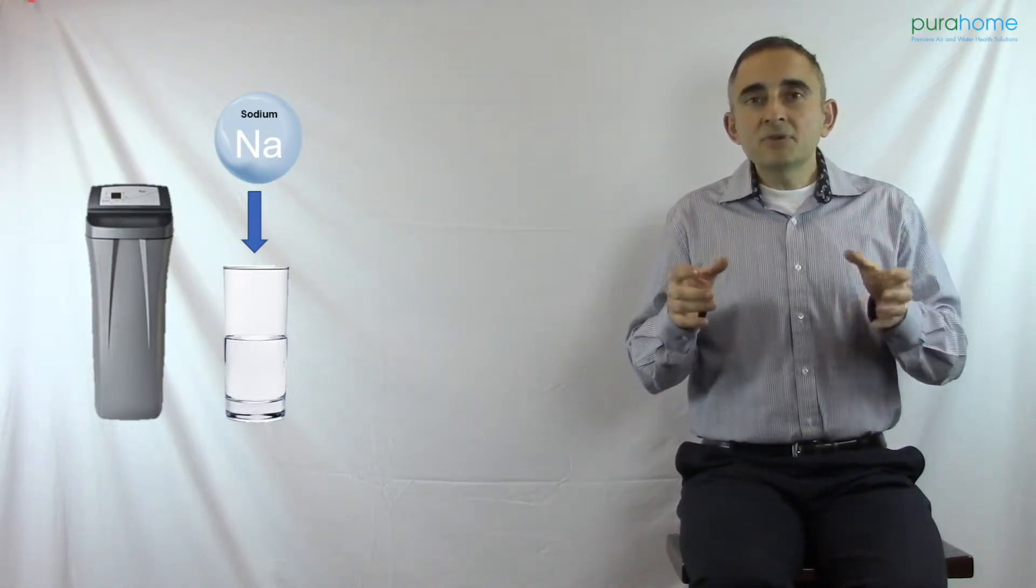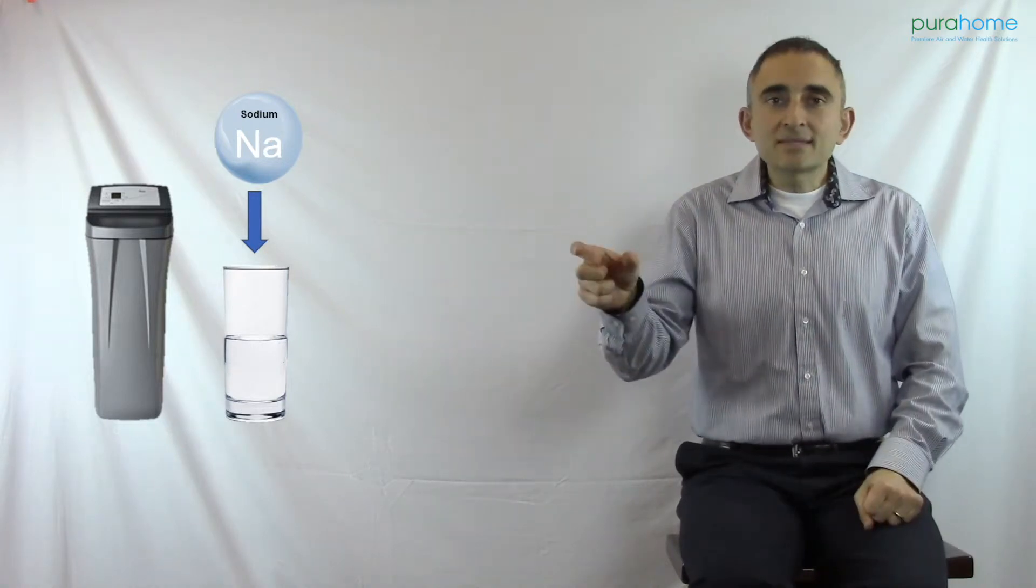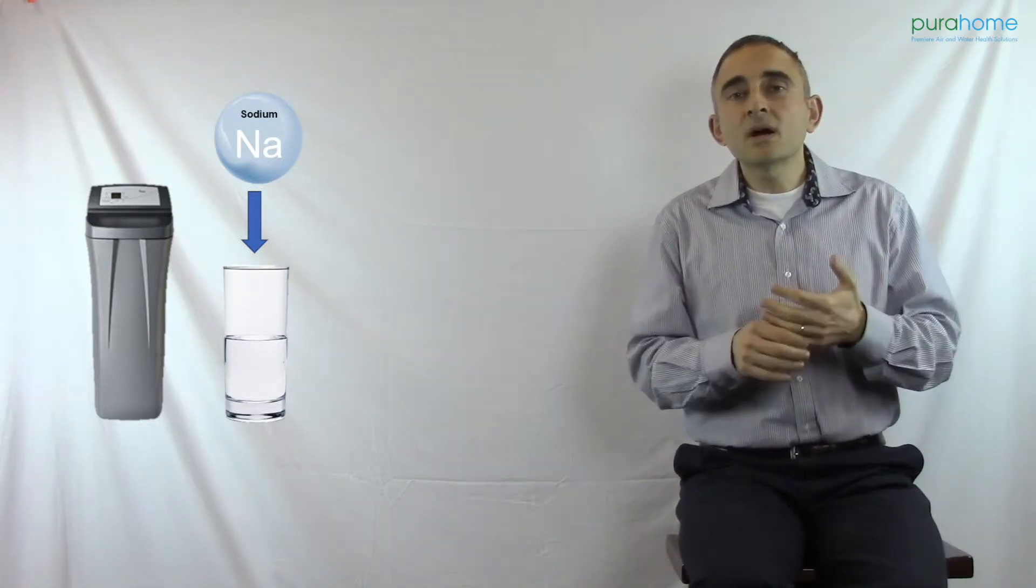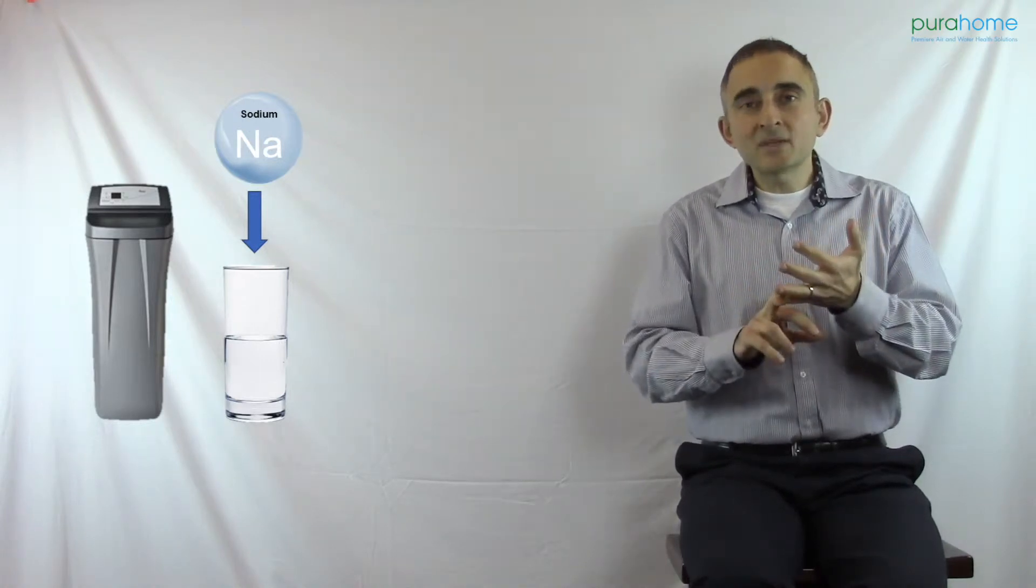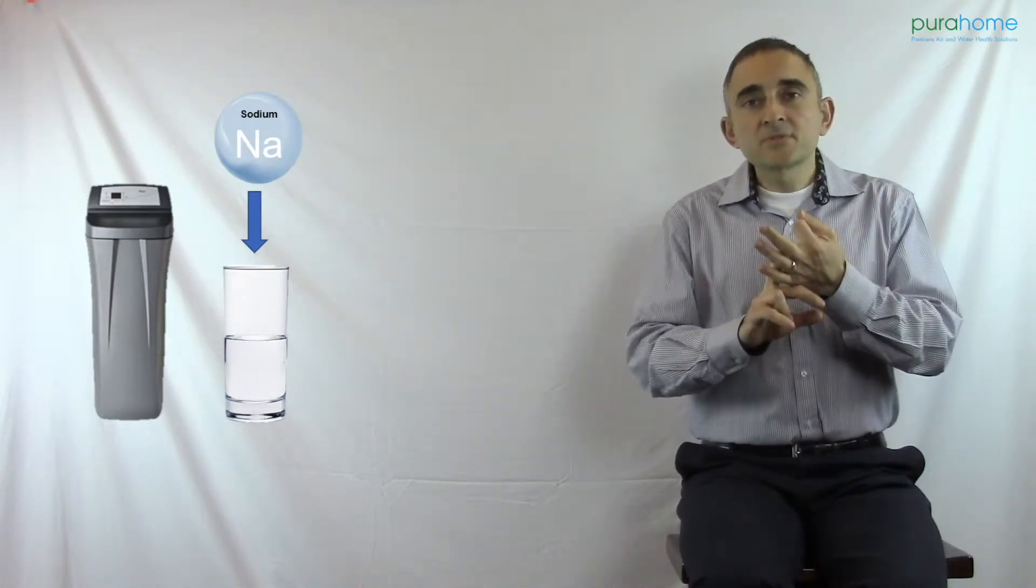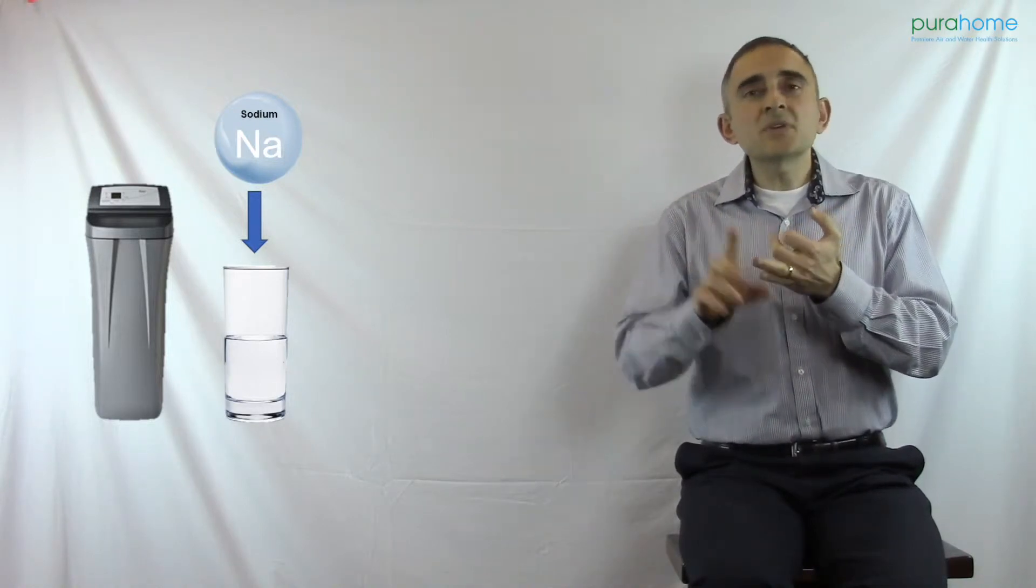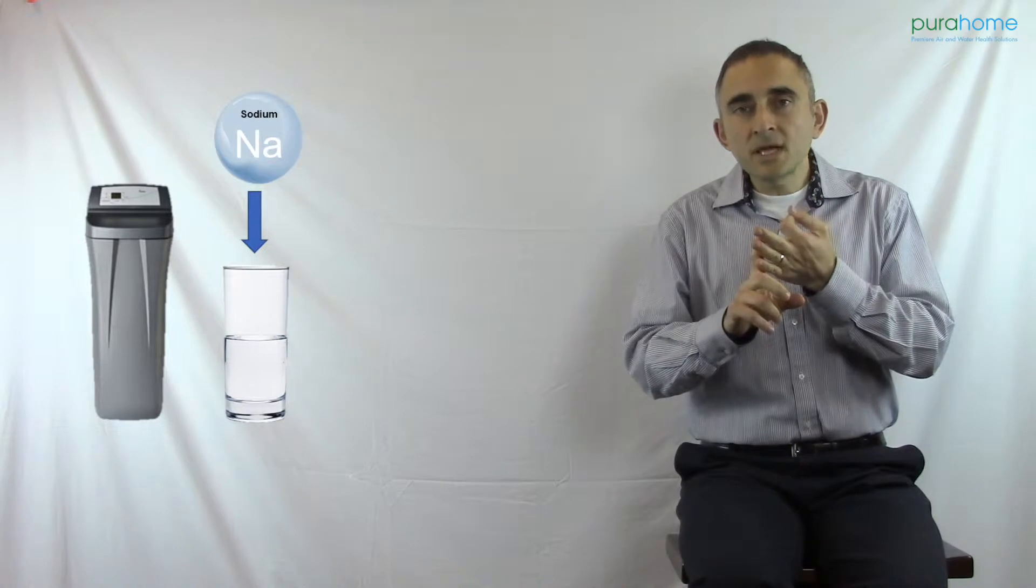A water softener takes ions out of the water. Ions are dissolved minerals in water, specifically calcium, magnesium and some heavy metals. Lead, for example, behaves like calcium, so a water softener that is very well designed can reduce your exposure to lead.